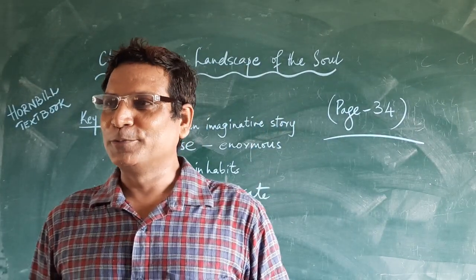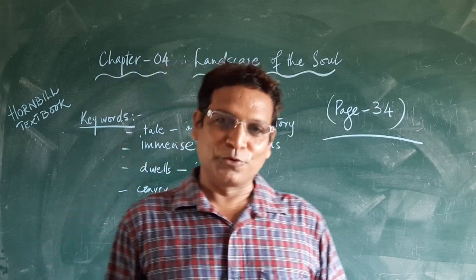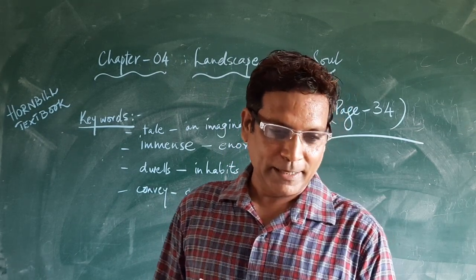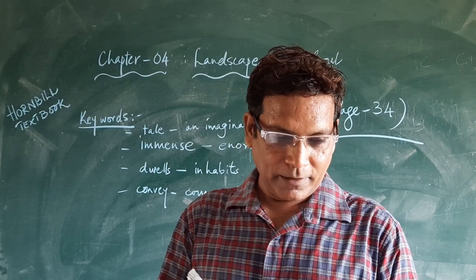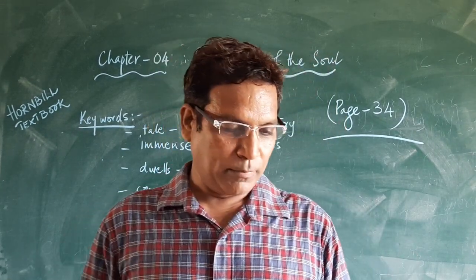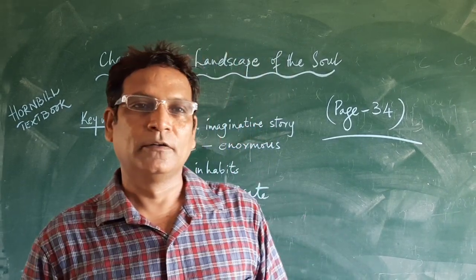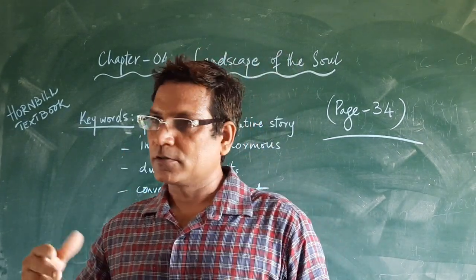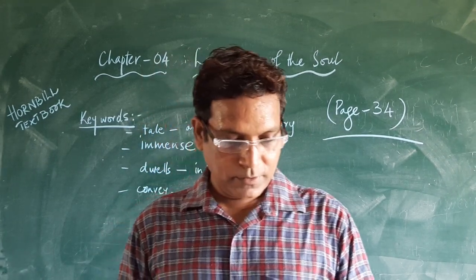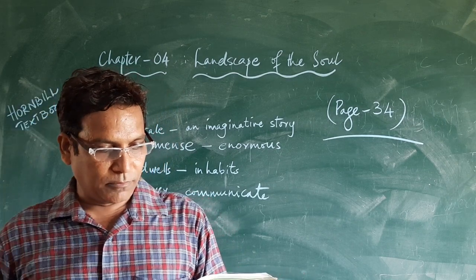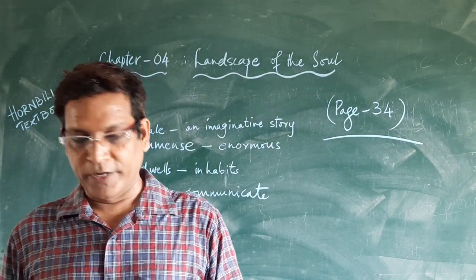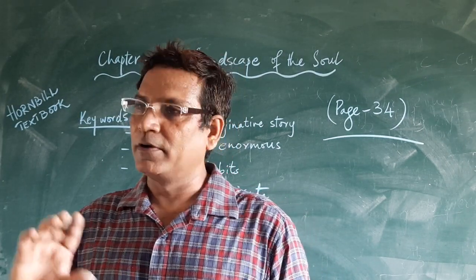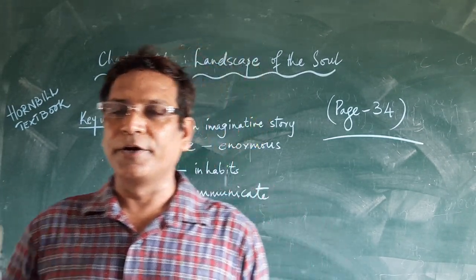Good morning friends! Today we are going to start with the fourth chapter of the One Bill textbook, that is 'The Landscape of the Soul.' This story interweaves three stories about different cultures — European art, Chinese art, and other painters who have done beautiful paintings across the world and earned their names. We start with page number 34 and 35, covering a small portion — one paragraph every day, so we can maintain continuity while going slowly and steadily.